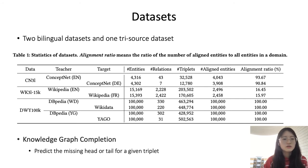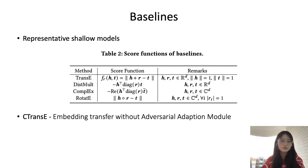We conduct experiments on two bilingual datasets and one three-source dataset. The statistics are listed in Table 1. We conduct experiments on the task of knowledge graph completion, which aims to predict the missing head or tail for a given triplet. We compare our work with four representative shallow models — including TransE, DistMult, ComplEx, and RotatE — and another embedding transfer-based baseline, C-TransE, which is TransE without the adversarial adaptation model.